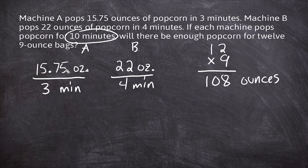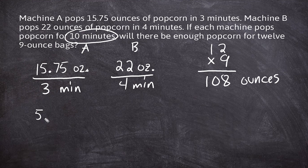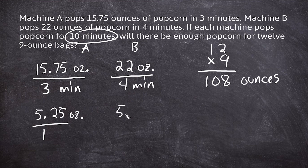Machine A pops 15.75 ounces in three minutes, and Machine B pops 22 ounces in four minutes. I'm going to convert each rate to a unit rate by dividing the numerator by the denominator. Taking 15.75 divided by 3 gives us 5.25 ounces per minute. Taking 22 divided by 4 gives us 5.5 ounces per minute. So we've converted both rates into unit rates.